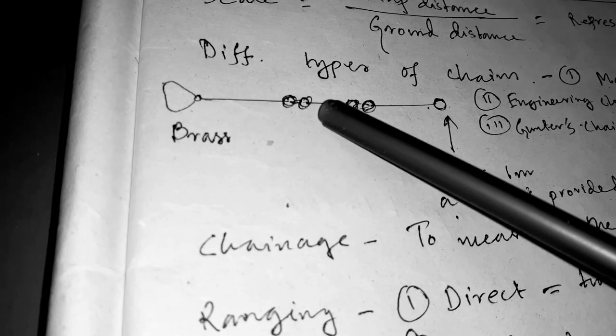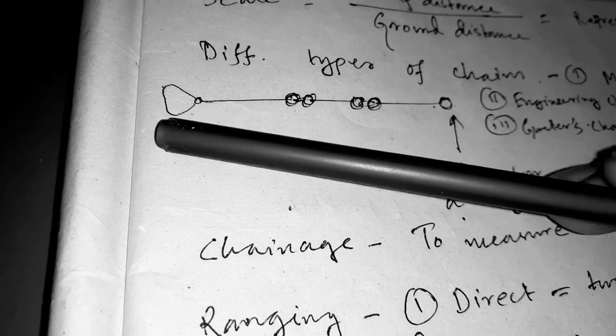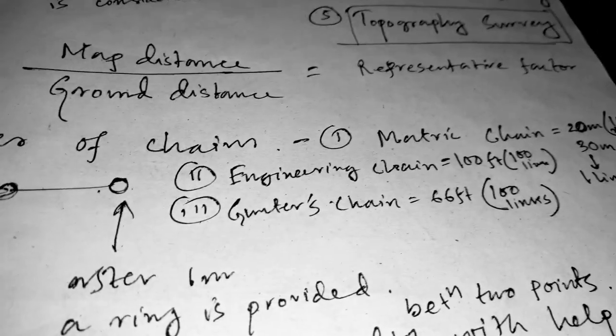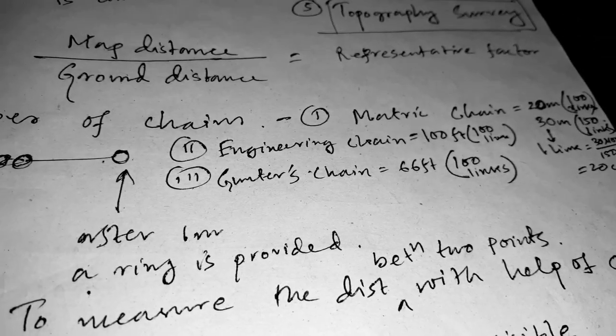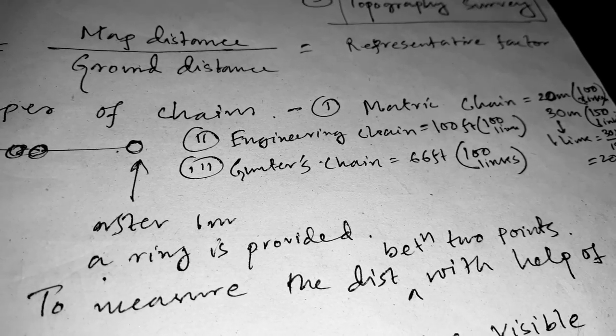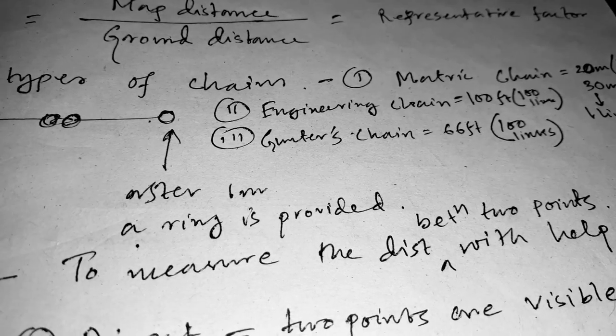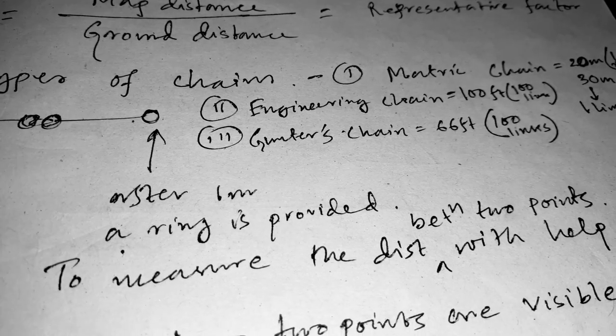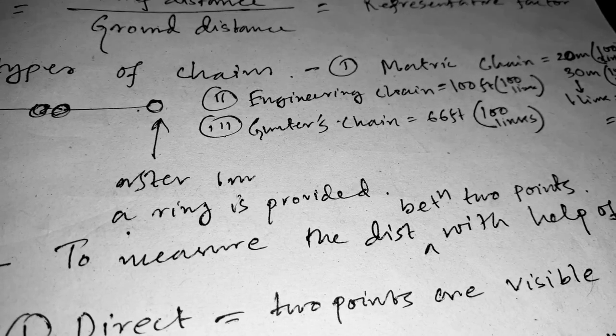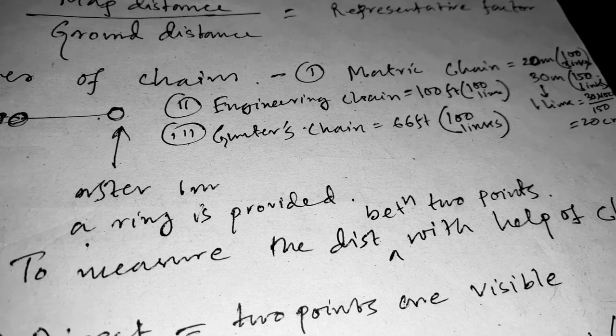This is written in the engineering chain. The engineering chain is basically 100 feet and there are 100 units, 100 links are provided. And next, gunters chain are basically 66 feet and there also 100 links are provided.